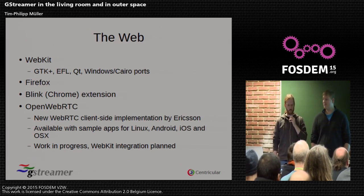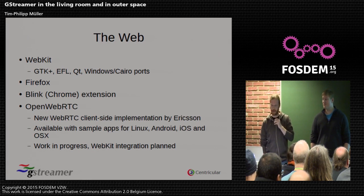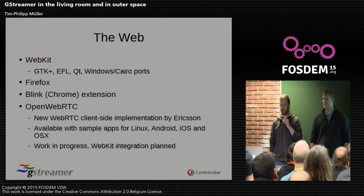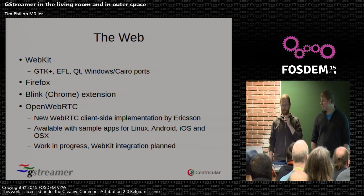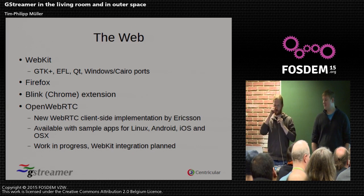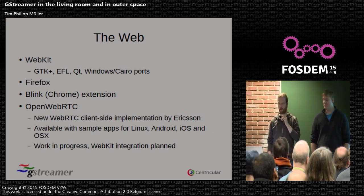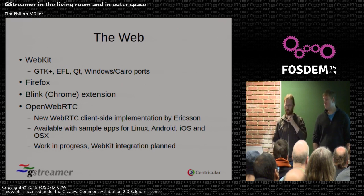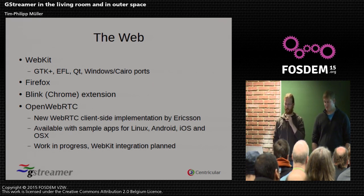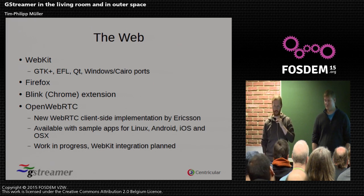Let's go to the web. GStreamer is used in WebKit in at least four different ports — the GTK, EFL, Qt, and Windows Cairo ports — for all the HTML5 media stuff, media source extensions, and web audio. It's also used in Firefox, mainly as a codec library by default on Linux. You can compile it on OS X and Windows, but it's not the default. Since a few days ago there's also a Blink/Chrome extension where you can use GStreamer to do all the media stuff in the browser instead of whatever Google provides. And there's a new WebRTC client-side implementation from last October called OpenWebRTC, which is just wrapping around GStreamer — it's something like 10,000 lines of code and all the heavy work is done by GStreamer.